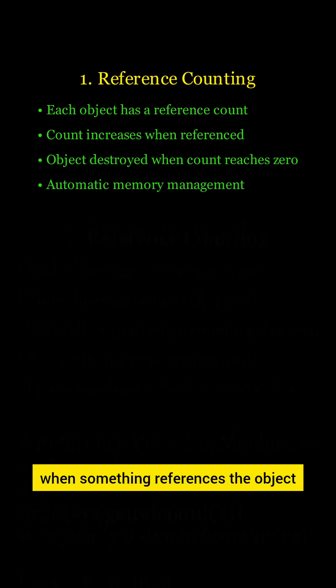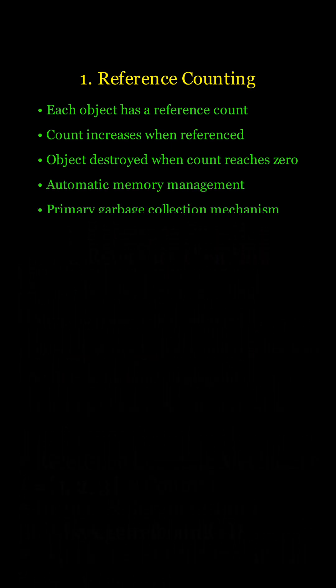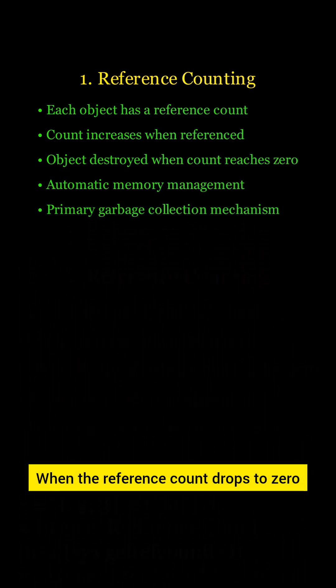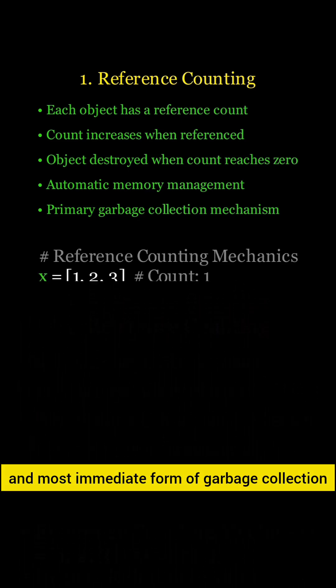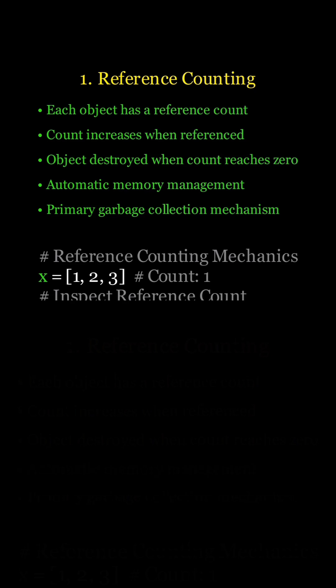This count increases when something references the object. When the reference count drops to zero, the object is automatically destroyed. This is Python's primary and most immediate form of garbage collection.